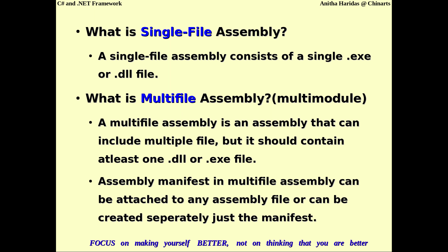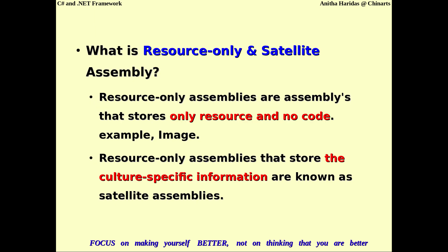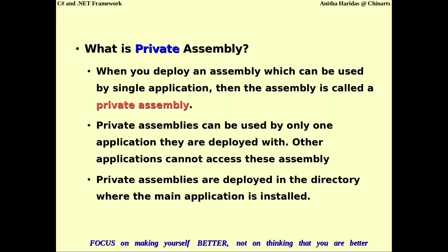In a multi-file assembly with many .exe or .dll files, the manifest information must be provided in any one of these files, or you can specify it as a separate file. A resource-only assembly will not contain any executable code or .dll code — it contains only resources like images or database connectivity. If along with those resources you provide culture-specific information, it becomes a satellite assembly. If an assembly is used by only one application, it is called a private assembly and is deployed in the main application directory.